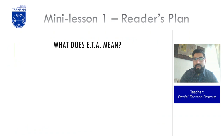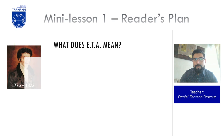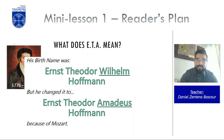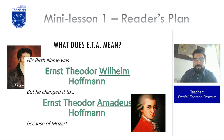What does the E.T.A. mean in the name of this author? It is important to know because he changed it — this was not his original name. His birth name was Ernst Theodor Wilhelm Hoffmann, and he changed it to Ernst Theodor Amadeus Hoffmann. He made this change as a tribute to the composer Mozart, a famous Austrian composer.